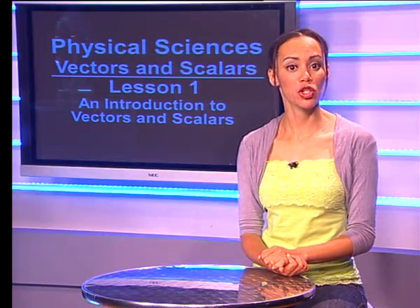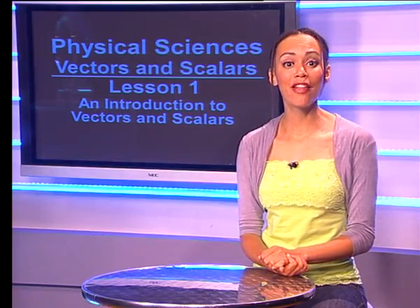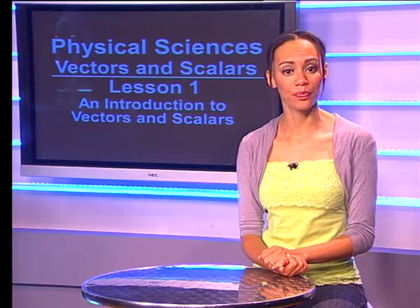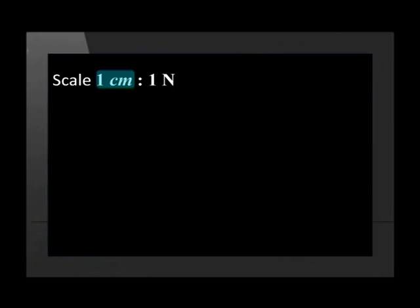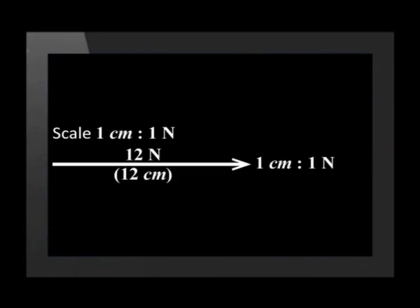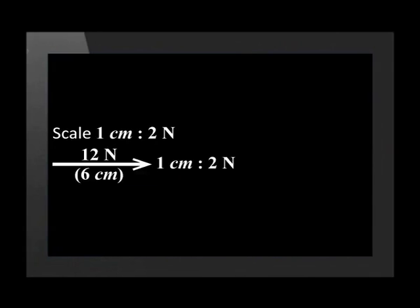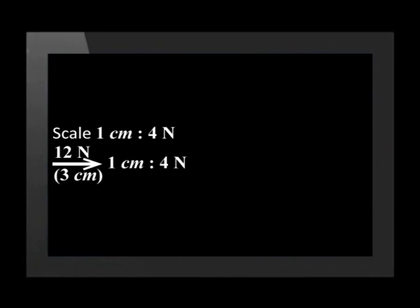For example, if we want to represent a force of 12 newtons, the scale determines how long the line is drawn. Using a scale of 1 cm to 1 newton, the 12 newton force is 12 cm long. With a scale of 1 cm to 2 newtons, it would be 6 cm long. And with a scale of 1 cm to 4 newtons, it would be 3 cm long.